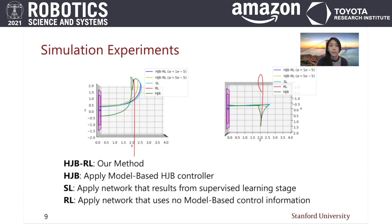To evaluate whether each step in our method was necessary, we compared against each component method. First, we used HJB alone, then the resulting policy from the supervised learning stage, and lastly, reinforcement learning alone.